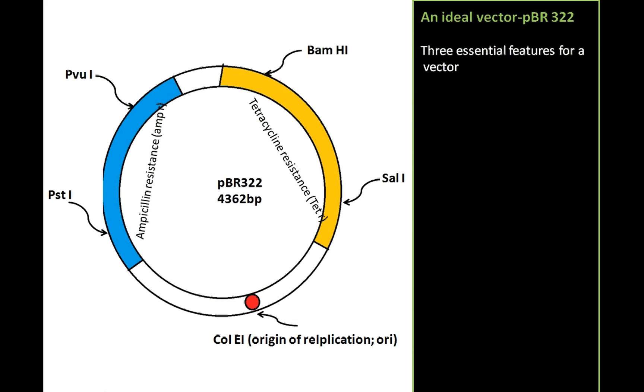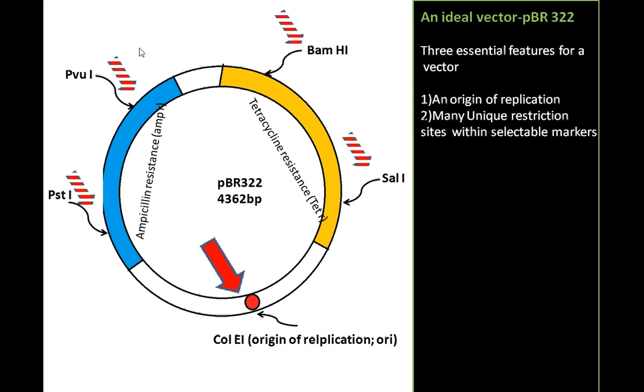Now, let us move into the details of a cloning vector. Let us take an example, an ideal vector that is pBR322, plasmid polymer and Rotrix 322. The three essential characters for a vector are an origin of replication, then many unique restriction sites within selectable marker regions, and at least two selectable markers.